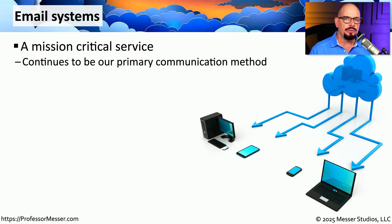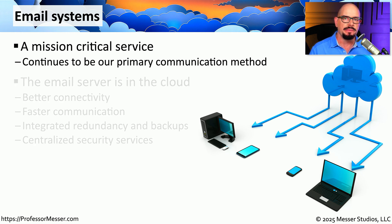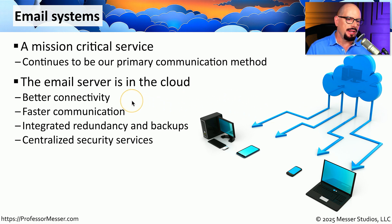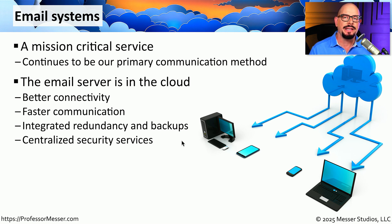A good example of a service that moved very quickly to the cloud is email infrastructure. Many organizations have taken an email server that used to be at their local facility and are now running that email server in the cloud. In the cloud, we commonly have redundant connectivity to all of these cloud-based services, usually over a very high-speed network connection. These cloud services also commonly have integrated redundancy and backup options so that your data is always available, and there is always a recent backup available if you need to restore information. These cloud-based data centers also have very strong physical security and well-integrated security for all of the apps and services running on their cloud infrastructure.